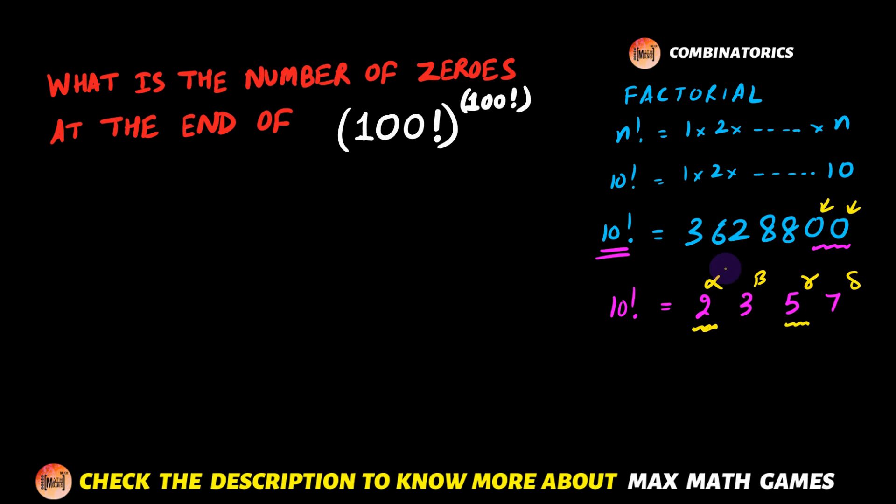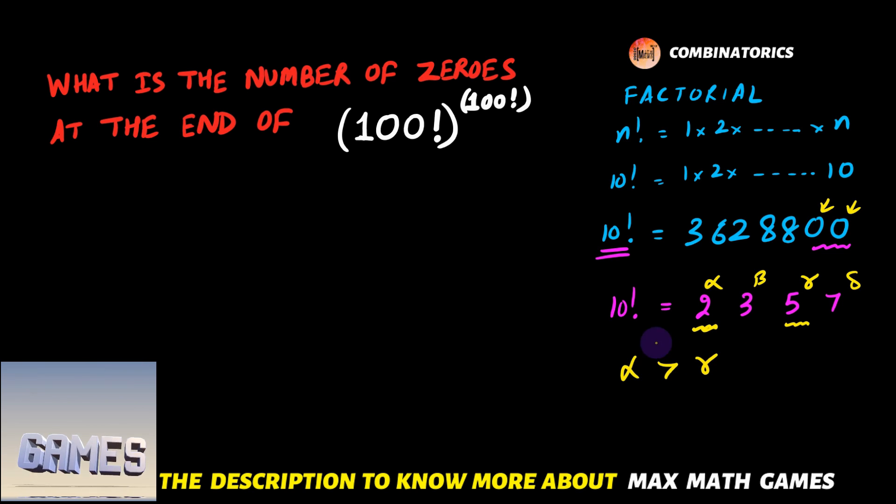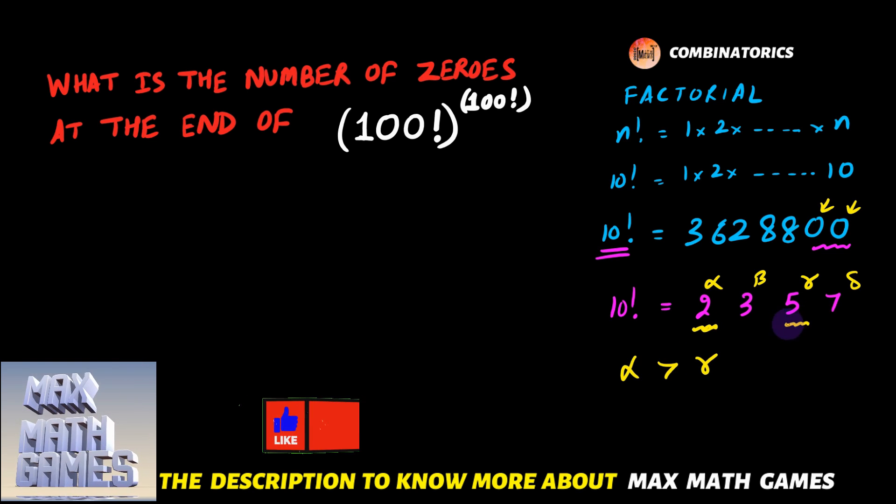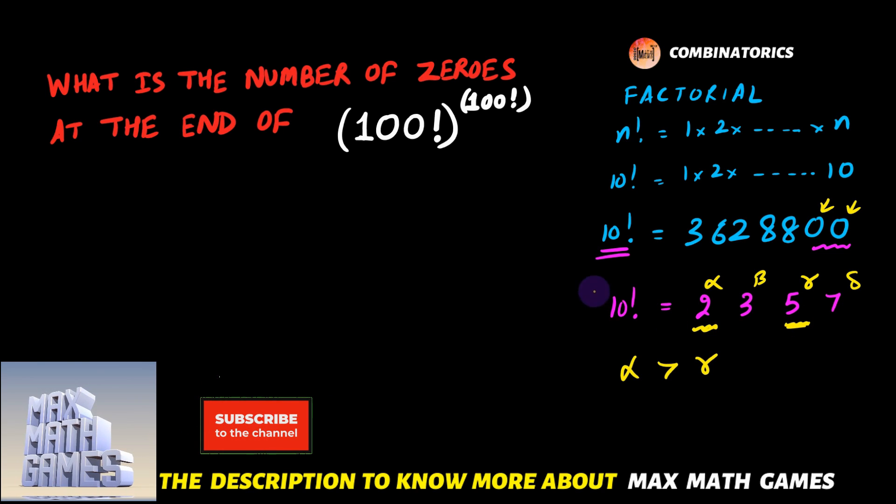So whatever is going to be the limiting number out of α or γ, that will be the number of zeros. And in any factorial, α is always going to be greater than γ. So we only need to check what is the value of γ in any factorial to calculate the number of zeros at the end.